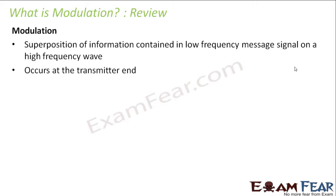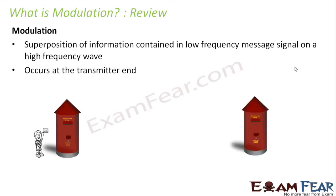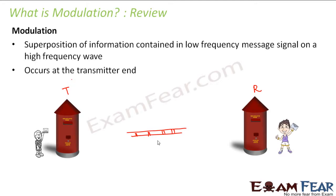Where does modulation occur? It occurs at the transmitter end. How will the letter reach from the transmitter to the receiver? The transmitter is here and the receiver is here. The channel could be rail or flight. The carrier wave is the train — the train actually carries the letter. Since the train has a higher speed, the letter also travels with the speed of the train. Modulation was helpful because during the process of modulation we could take out the benefit of a high frequency wave. That was the advantage of this process of modulation.